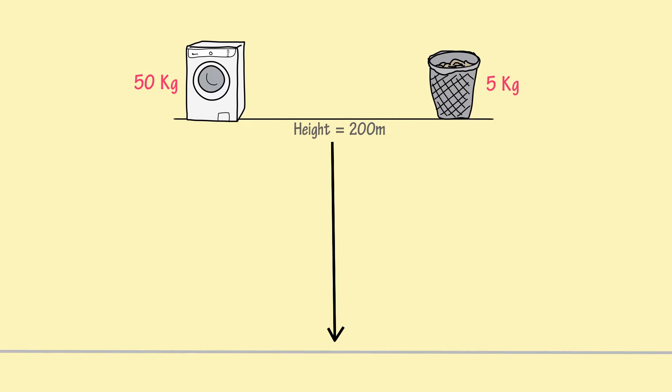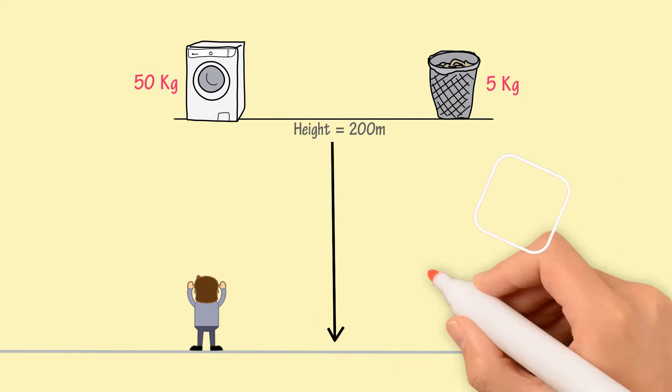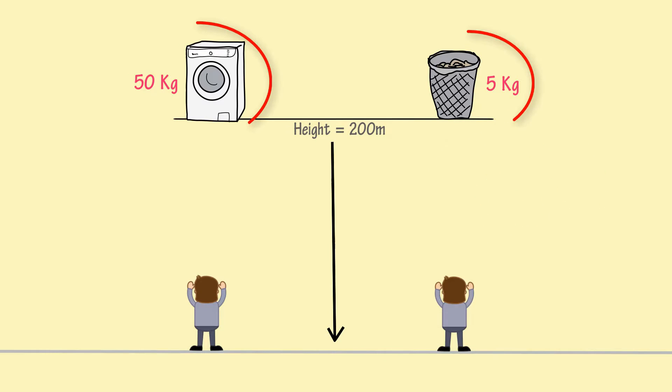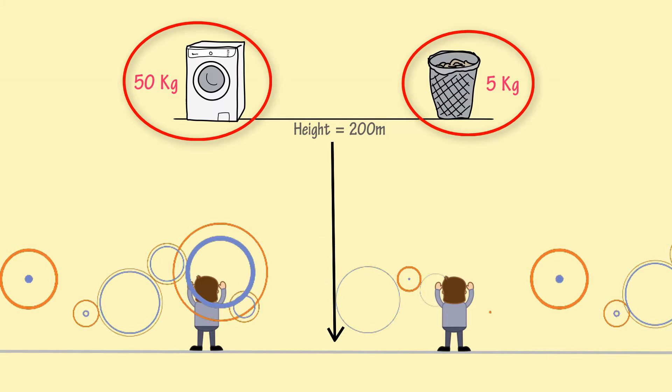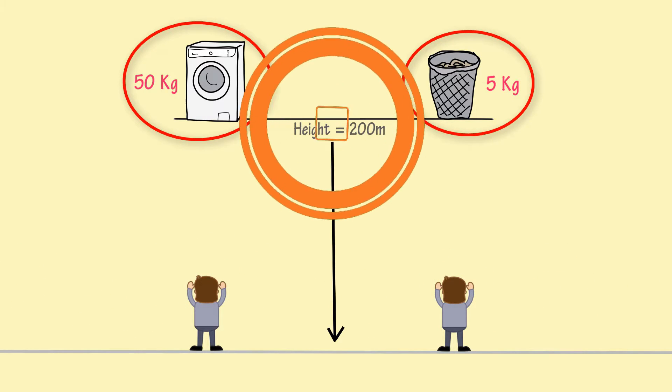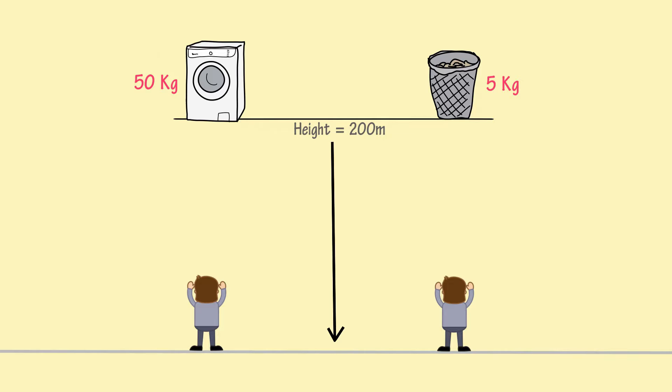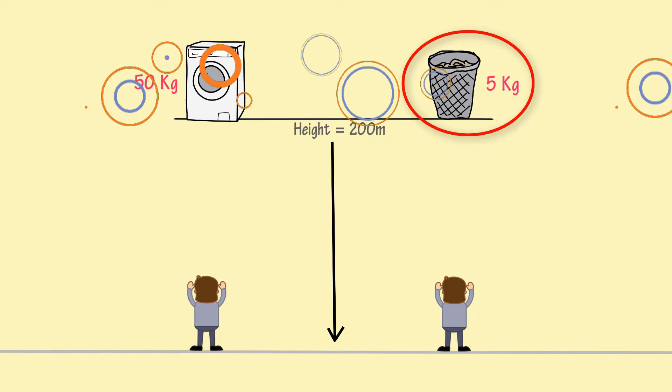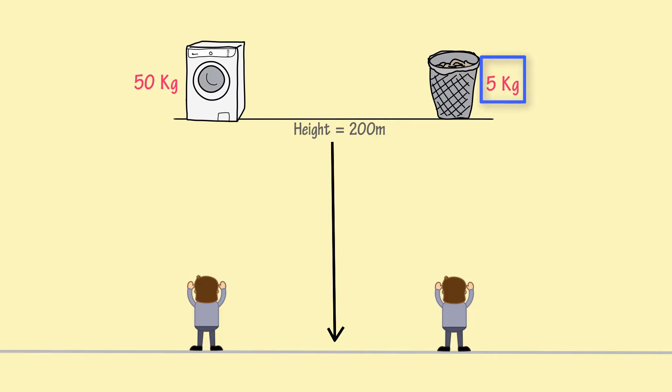These both bodies accelerate with the same speed towards Earth. If I ask you to catch one object out of these two objects, which object would you choose to catch? I am sure you will choose the object of mass 5 kg. Is it because the mass of 5 kg is less than 50 kg?